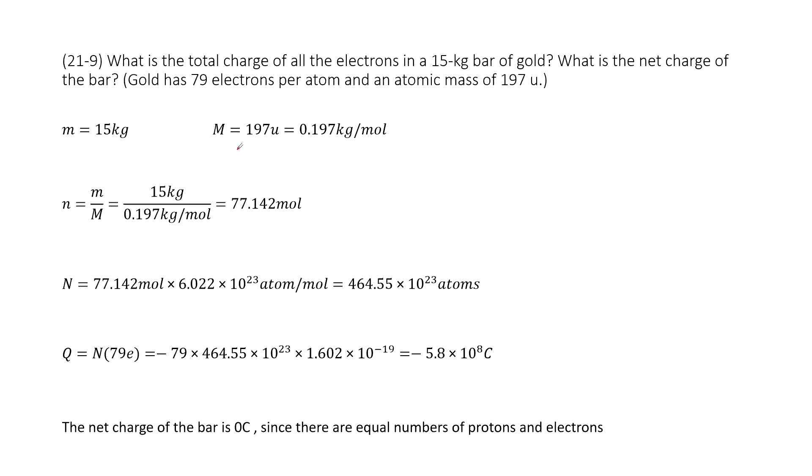Now you can see what the problem is giving you. It tells you for this gold object, it has 79 electrons per atom and an atomic mass of 197u.